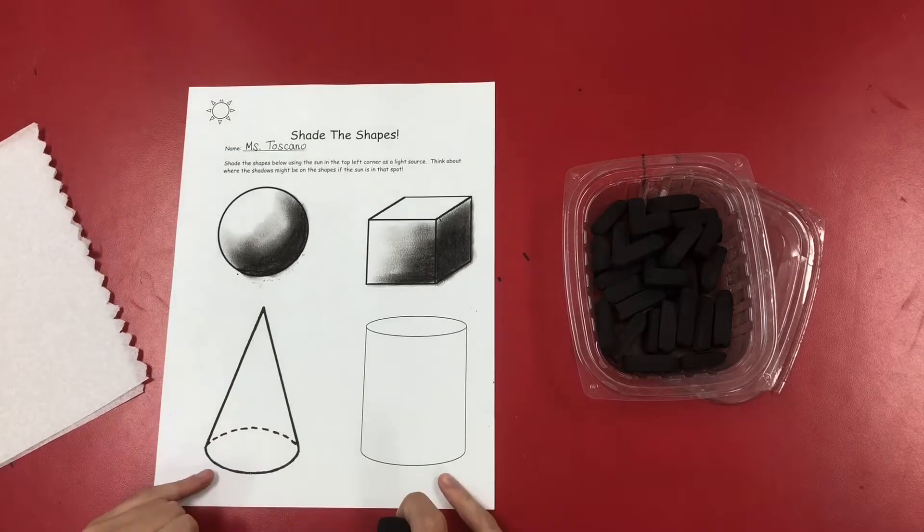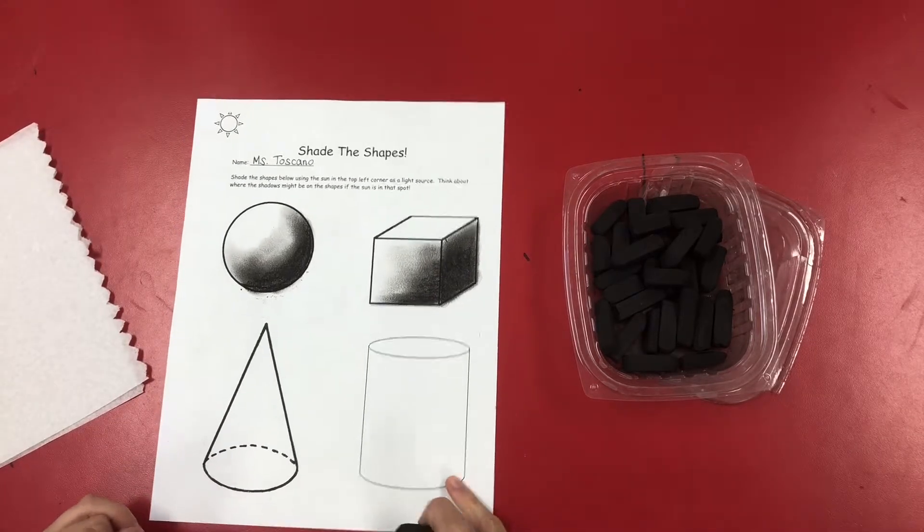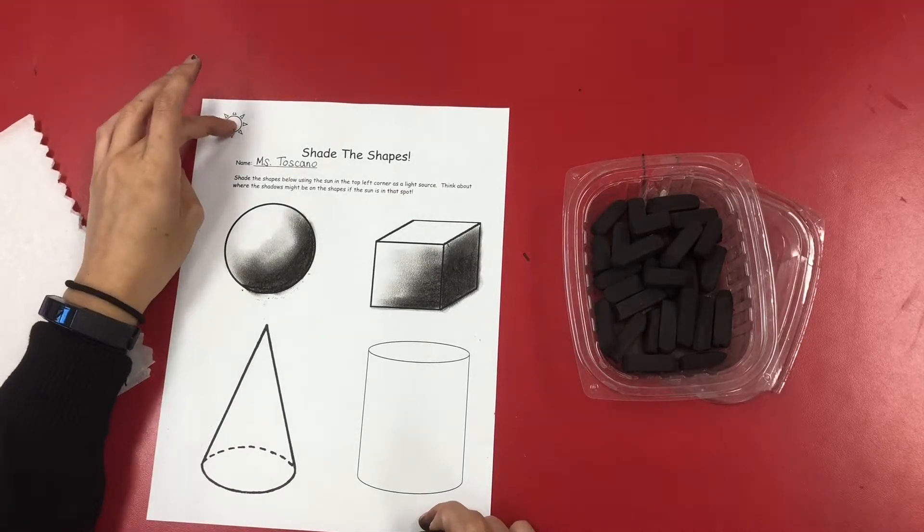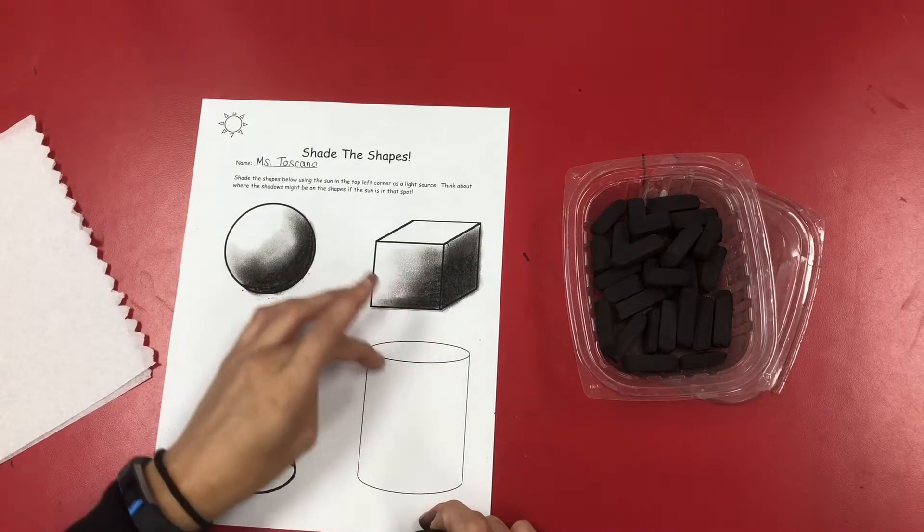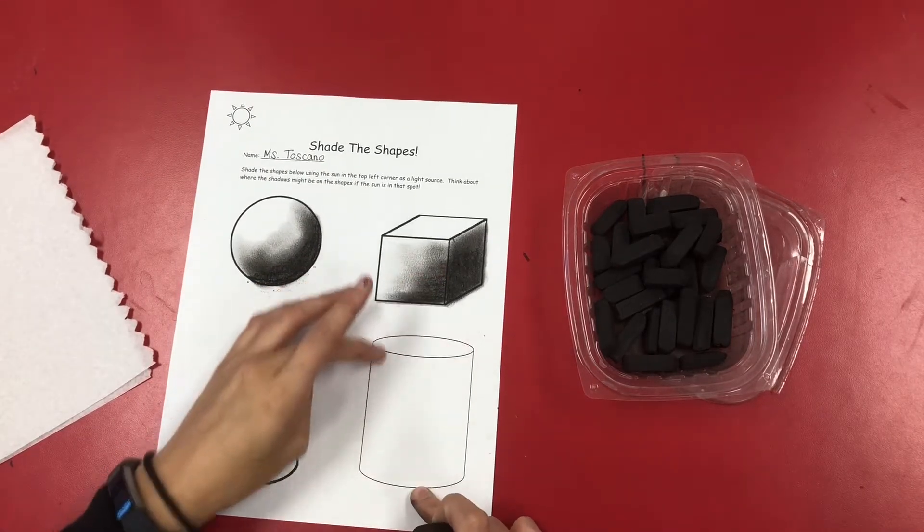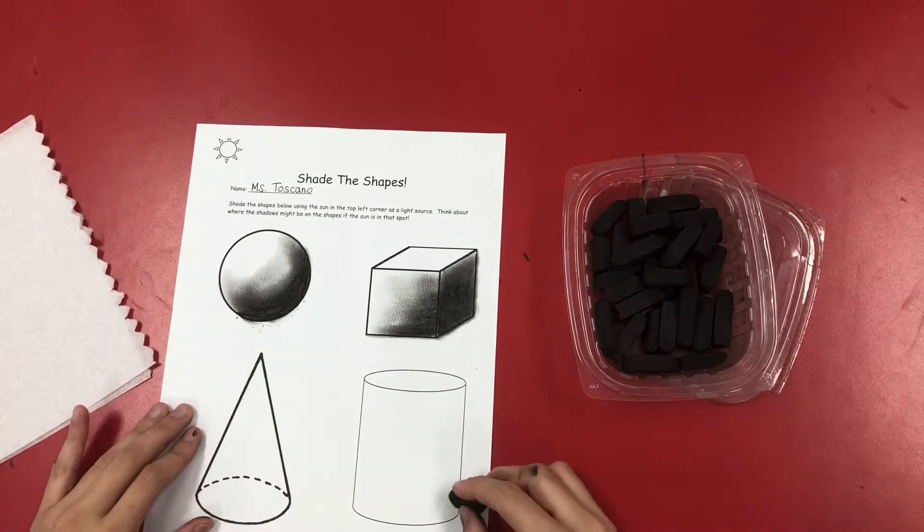I'm going to do one of these two at the bottom—I'm going to do the cylinder. Once again, I locate my sun and figure out where the sun is going to be hitting the most. Probably the top and this left corner, so I locate the right corner.